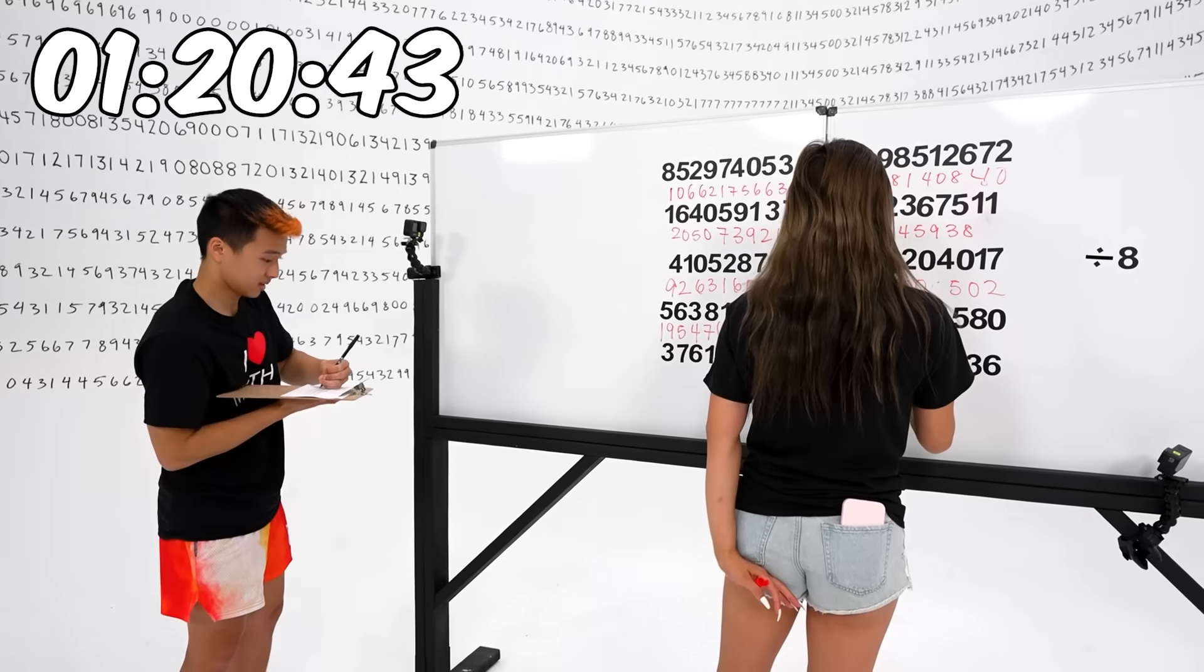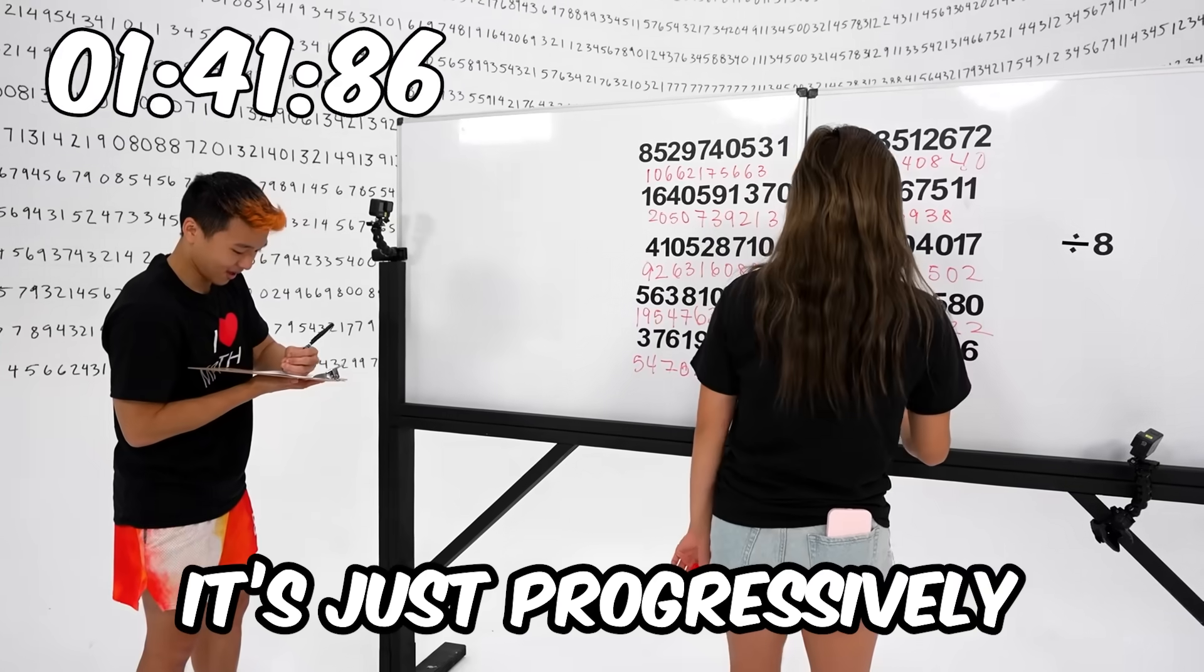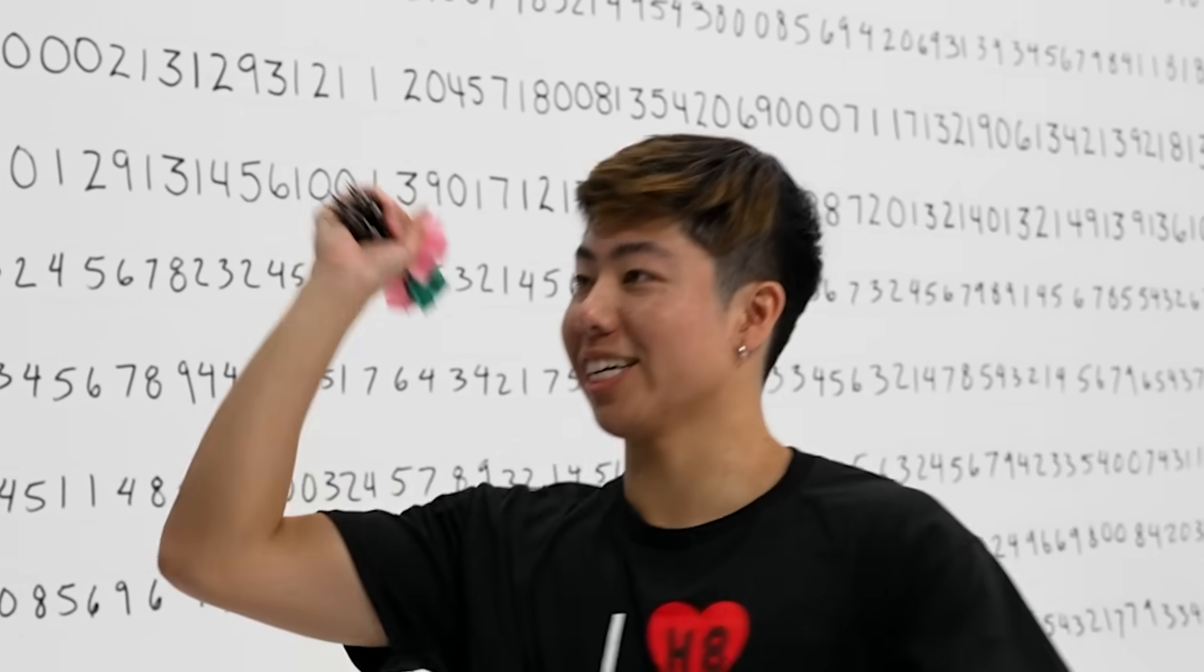I almost did it! Jake, faster! She's almost done! You better hurry! Michelle, how do you do a 100-digit math problem that fast? It's just progressively getting worse.